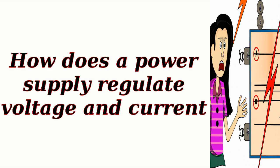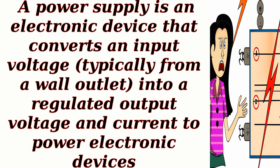How does a power supply regulate voltage and current? A power supply is an electronic device that converts an input voltage, typically from a wall outlet, into a regulated output voltage and current to power electronic devices.